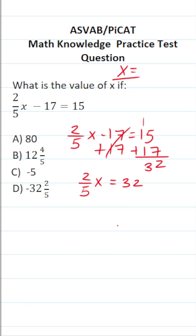Now the next thing we've got to do is clear this two-fifths that's in front of x. To do that, we're going to multiply both sides of the equation by the reciprocal of two-fifths, which is 5 over 2. This crosses out here and here, leaving you with x over here.